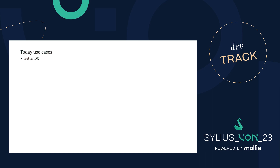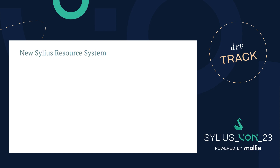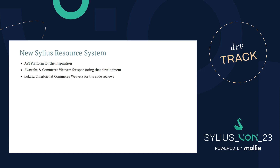We want something better. We want to customize the persistence layer, such as using an ERP or Elasticsearch for example. And we want to use it in our DDD projects. So to fulfill these requirements, I've created a new Silius resource system. Basically it's based on API platform internals, and we can thank that project and the core team members for the inspiration. To make that happen, I submitted about 120 pull requests — a lot of work for me but also for Lucas Crochelle at Commerce Rivers. Thank you for all the reviews.